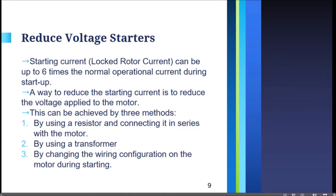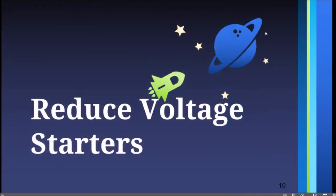Reducing the voltage can be achieved by three methods: by connecting a resistor in series with the motor windings, by using a transformer, or by changing the wiring configuration of the motor during starting. These correspond to primary resistor starting, auto transformer starting, and Y-delta starting respectively.